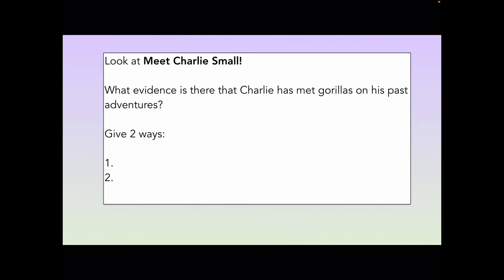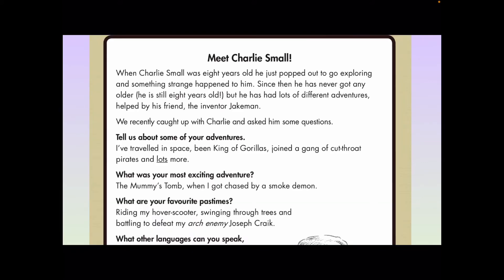Let's look at an example of what we're talking about. The question says: look at Meet Charlie Small — a text we're about to read — and it asks, what evidence is there that Charlie has met gorillas on his past adventures? Give two ways. So we're thinking about Charlie meeting gorillas in his past adventures. The text is here — Meet Charlie Small — and we can scan the text for the word gorilla, and that might help us to find some good evidence to answer this question.